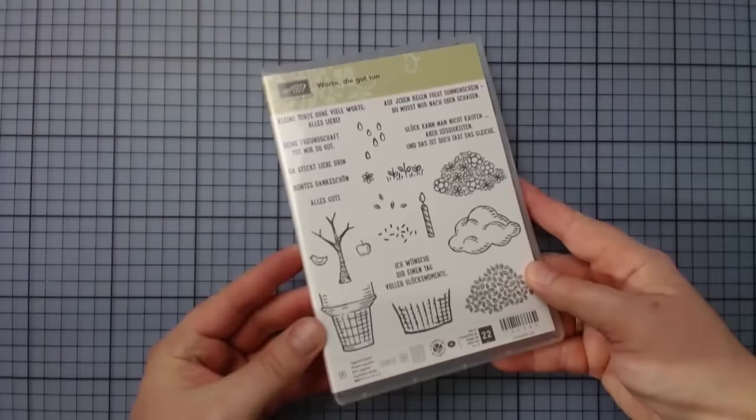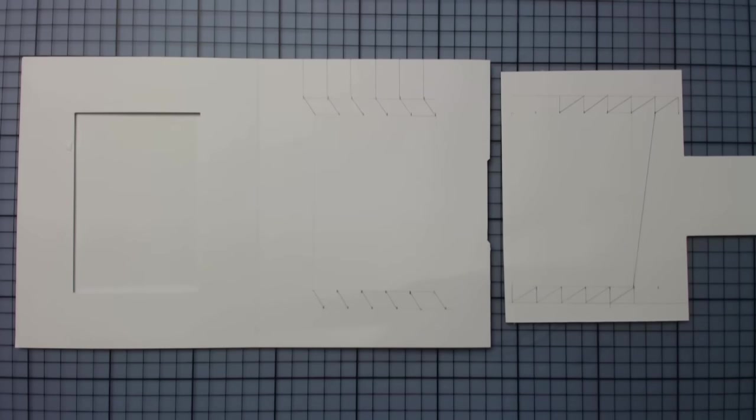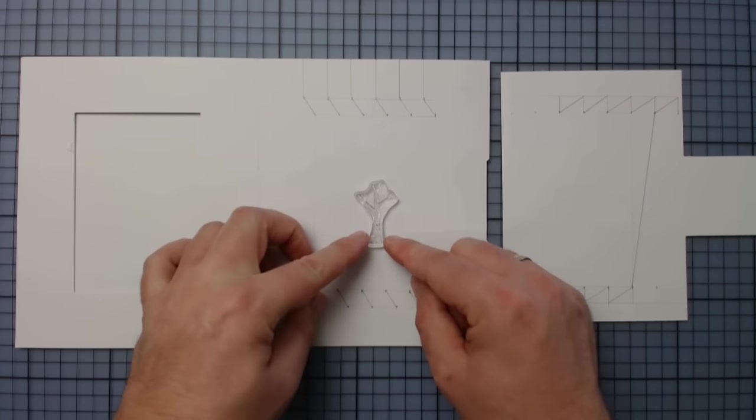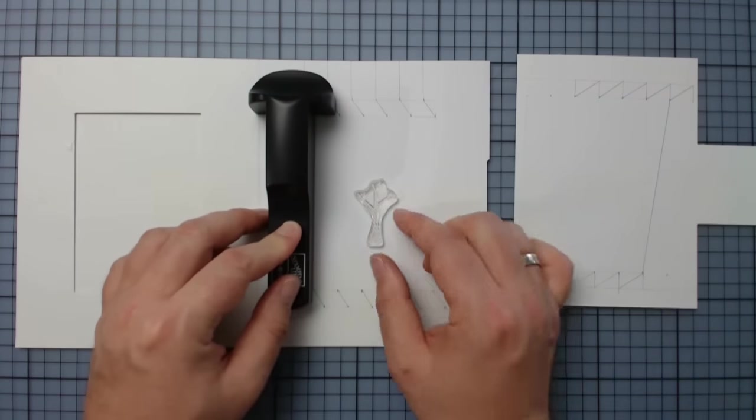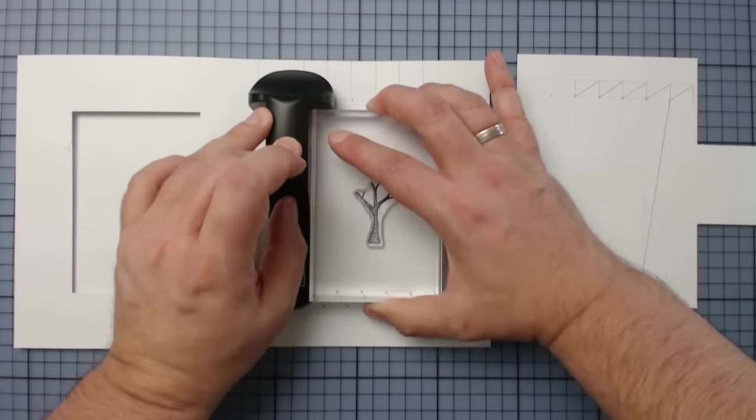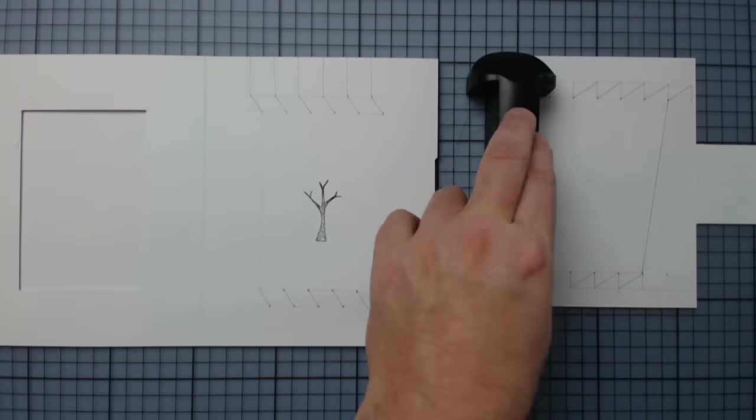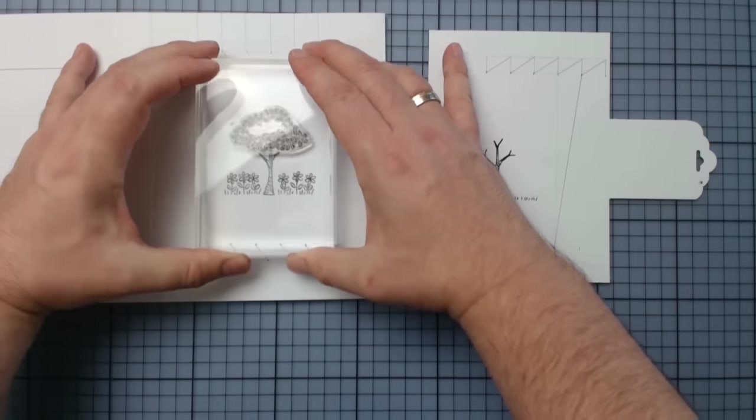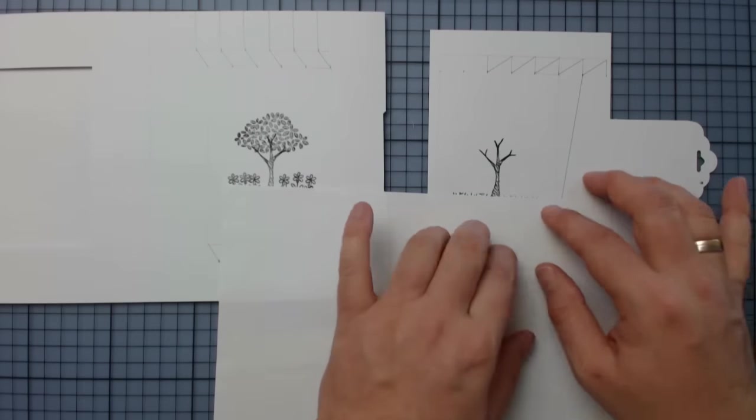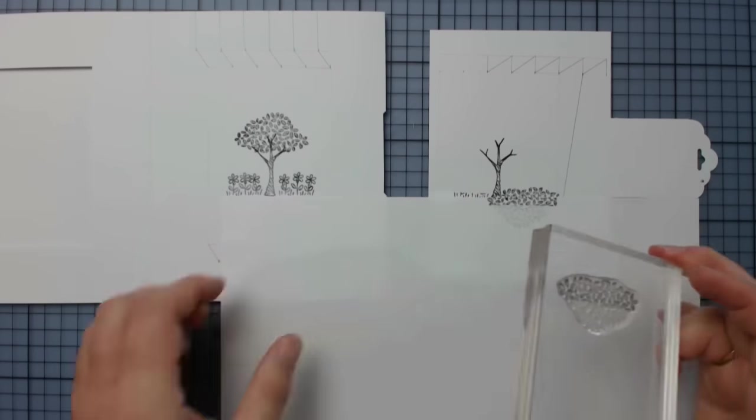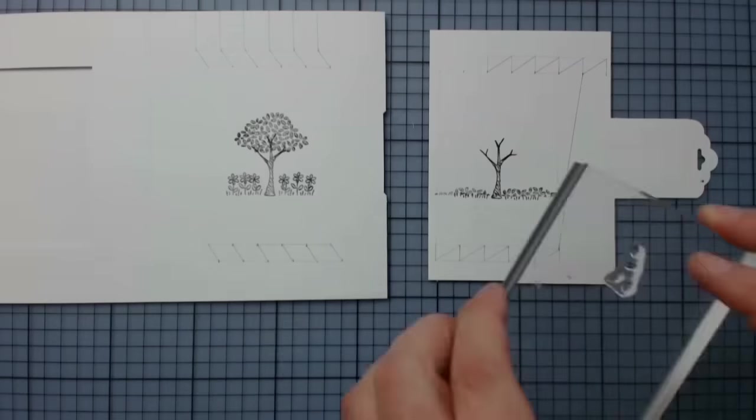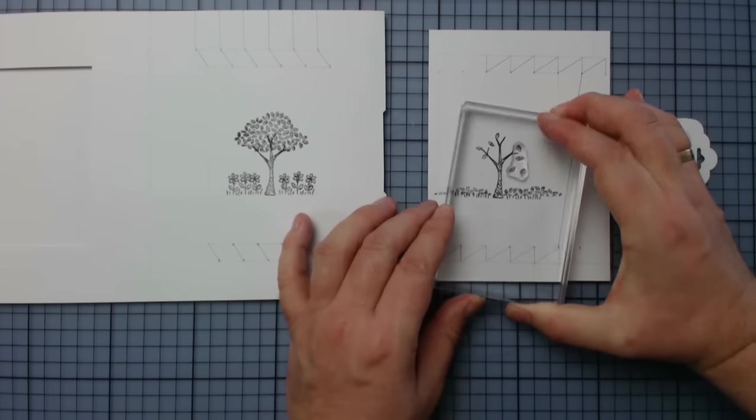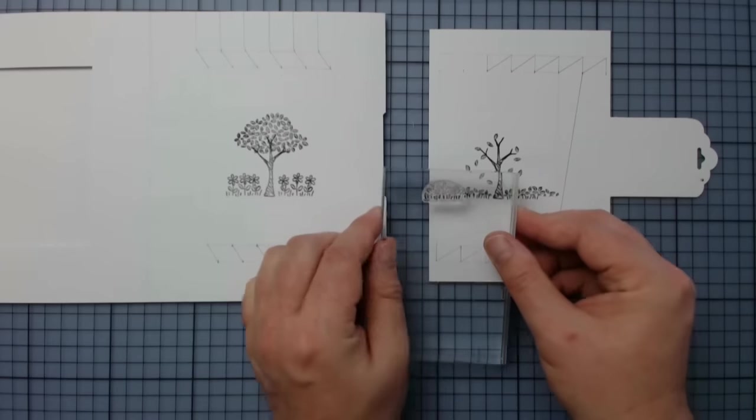Today I am stamping the same scene in different seasons. Therefore I am using a stamp positioner to get the tree in the same position on both pieces and then I am decorating it once in a late summer and once in an autumn look. As usual you will find a list of all the supplies I used in the description box below this video.